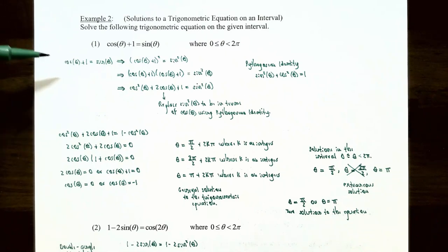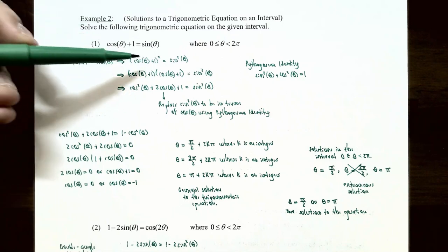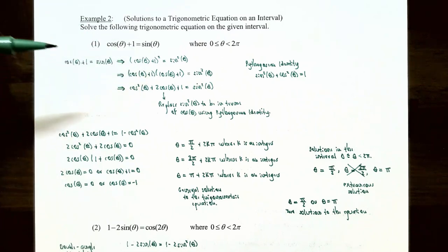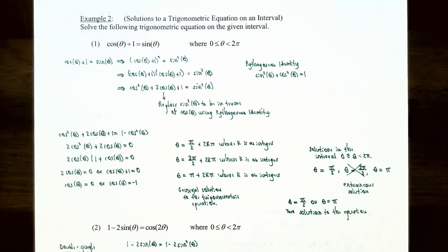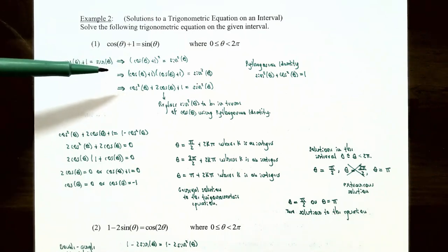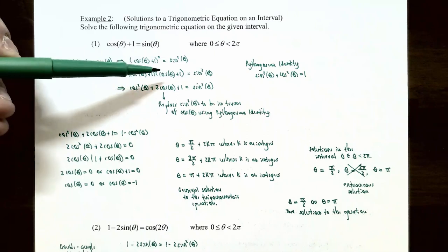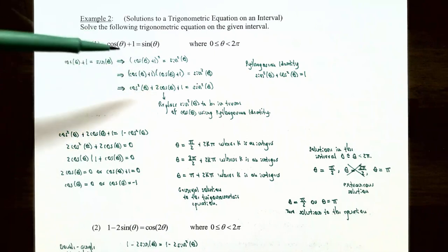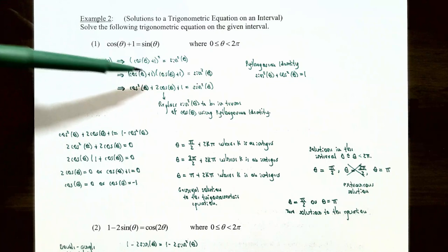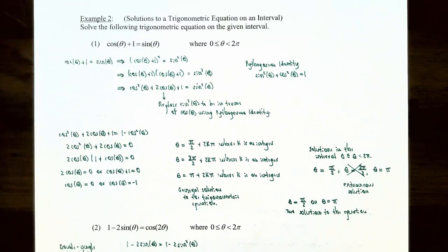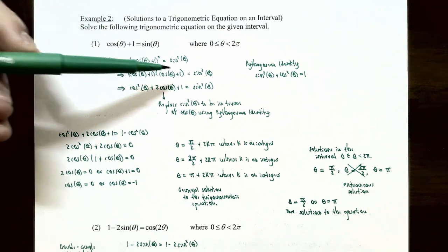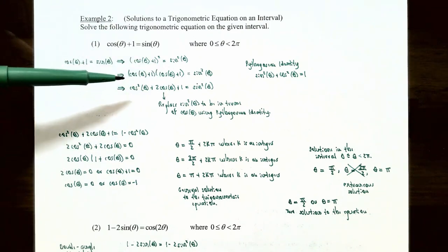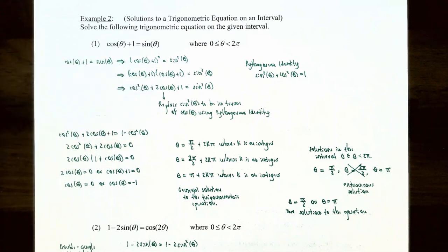Let's square the left side of the equation — cosine of theta plus one, all squared — and also square the right side, sine of theta squared, giving sine squared of theta. To simplify the left side we use the FOIL method: cosine of theta times cosine of theta gives cosine squared of theta, and the two middle terms give two times cosine of theta, plus one times one gives one. So the left side is cosine squared theta plus two cosine theta plus one, and the right side is sine squared theta.